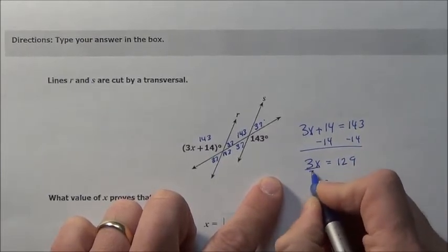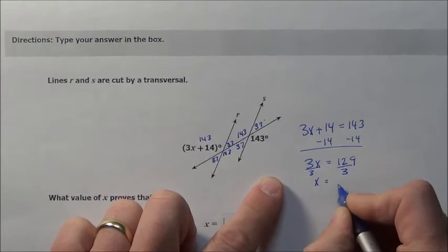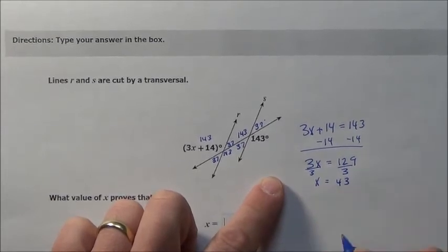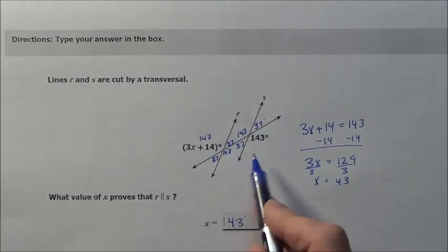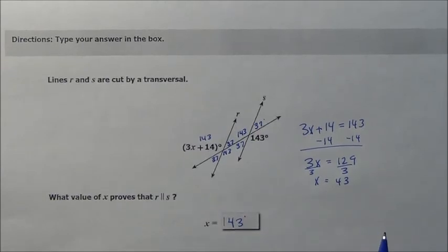When we then divide by 3 on both sides, 3 goes into 12, 4, 3, and that 43 is going to be our answer. So X is going to be, boom, 43. Wasn't too difficult to do, as long as you remember all our rules with parallel lines.